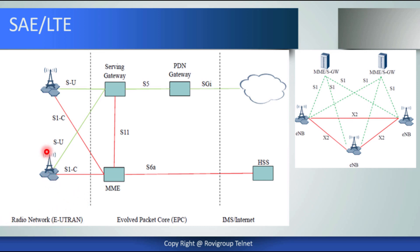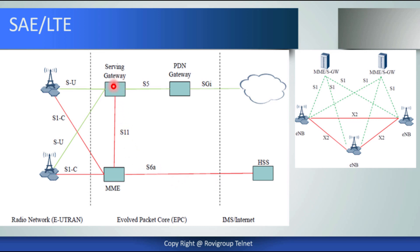The E-UTRAN composed of the eNodeB connects with the serving gateway through the S1-U interface and with the MME through the S1-C interface. S1-C is the control plane and S1-U is the user plane of the S1 interface. The serving gateway and MME communicate through the S11 interface, and the MME uses the S6-A interface to communicate with the HSS for authentication of users in the LTE network. The serving gateway connects with the PDN gateway through the S5 interface, and the PDN gateway connects with the external IP service provider through the SGI interface.